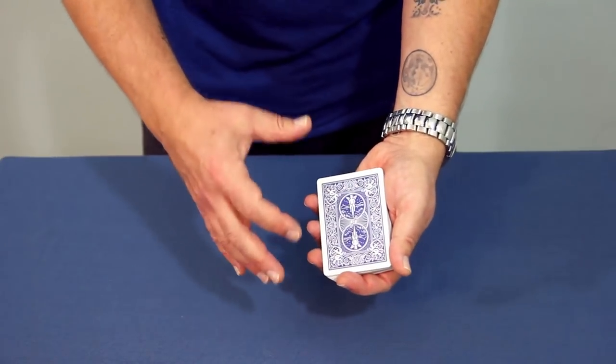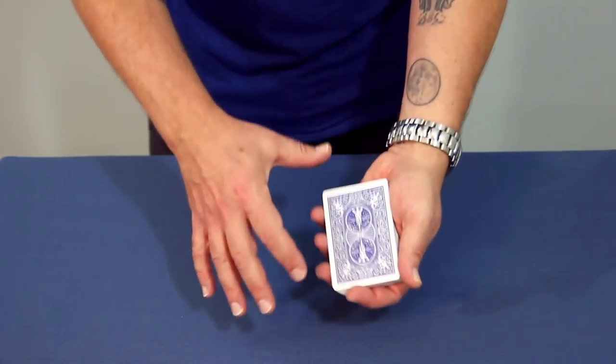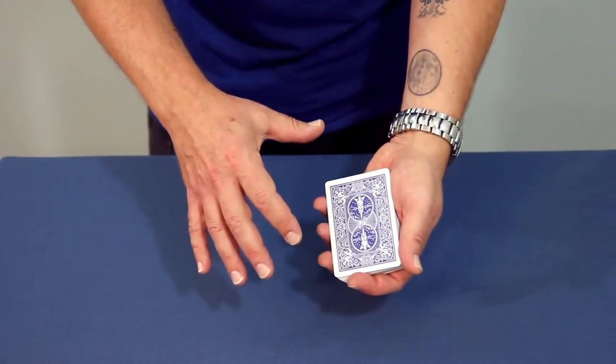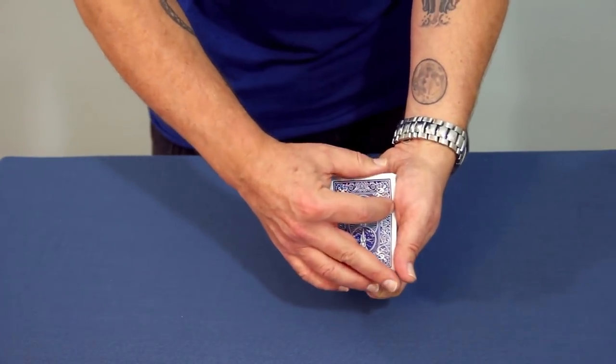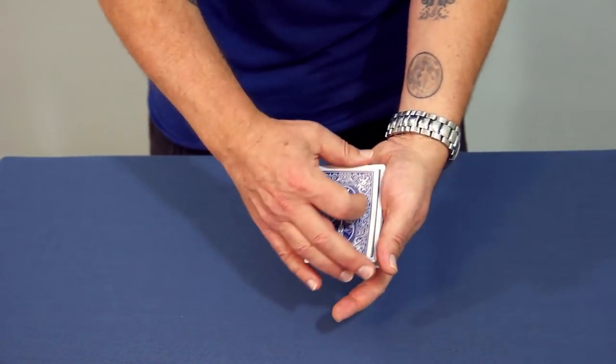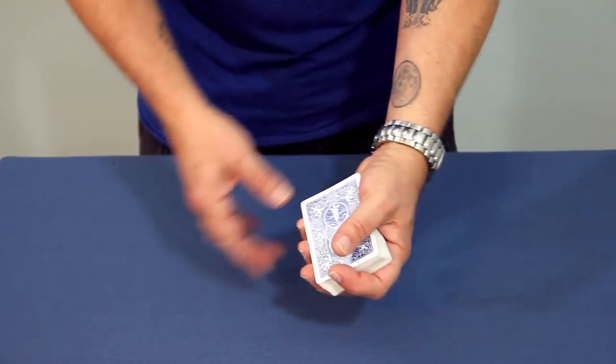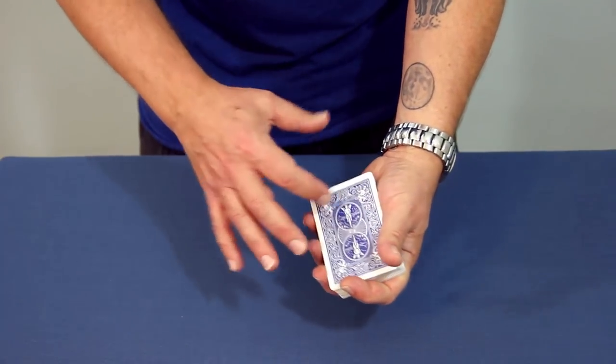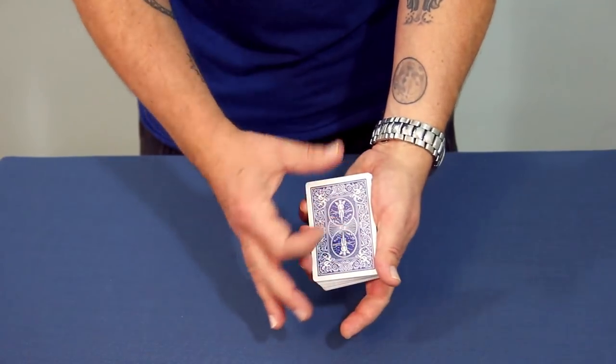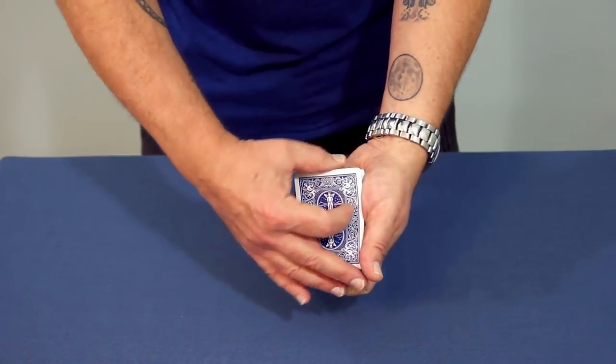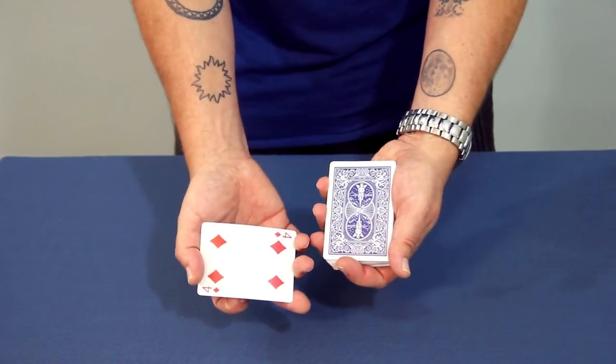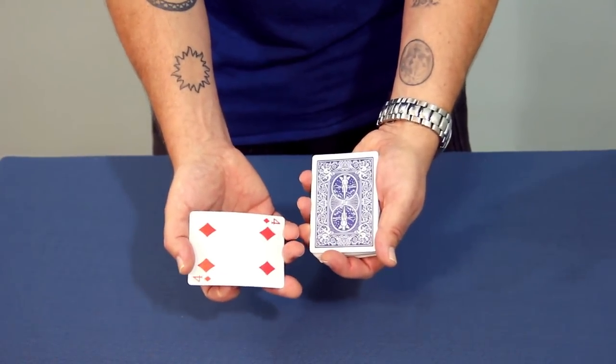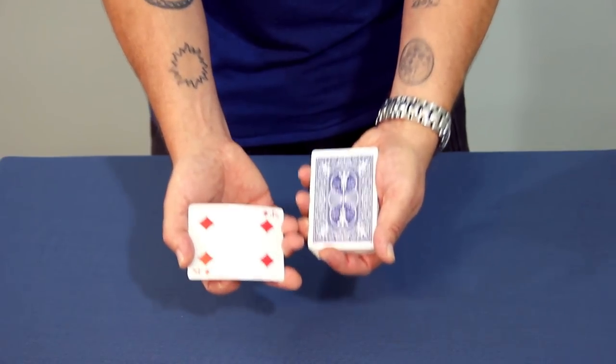However, what more advanced sleight of hand generally aspires for is you want things to look relaxed and natural. This kind of coming over here and showing a card is not going to be anywhere near as natural as coming over casually and flipping over the card like this. And it's a great place to start, but in time you'll want to move on to more natural looking double lifts.